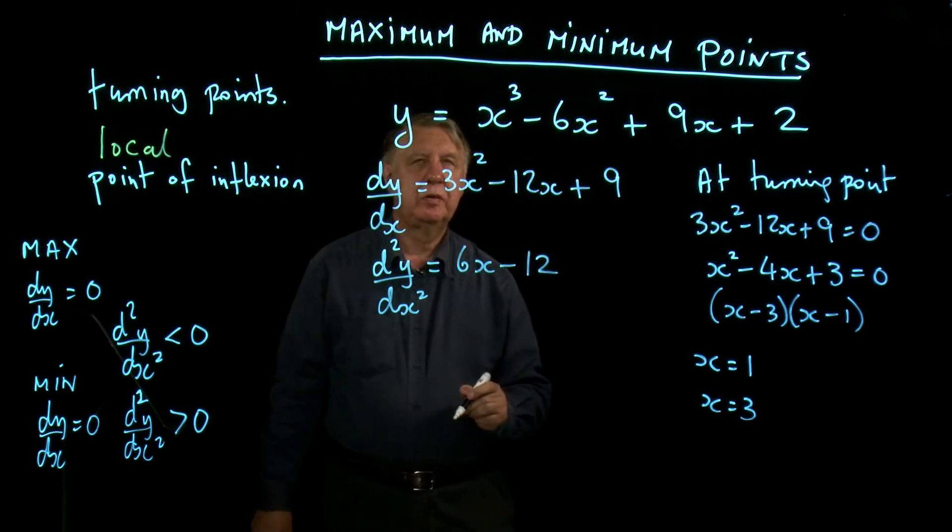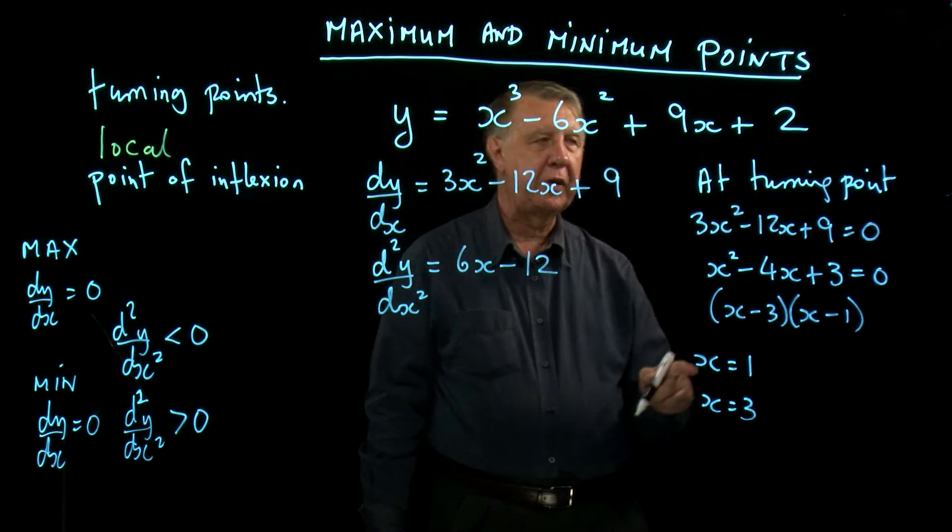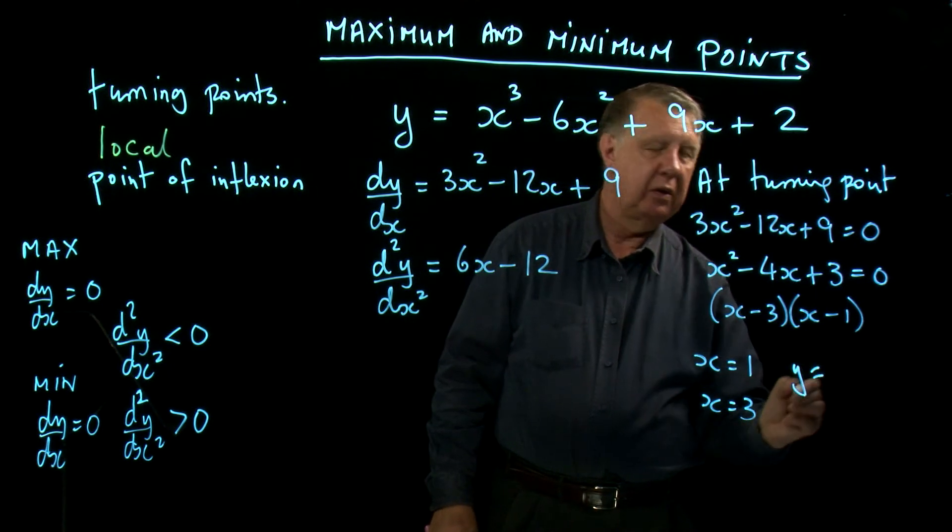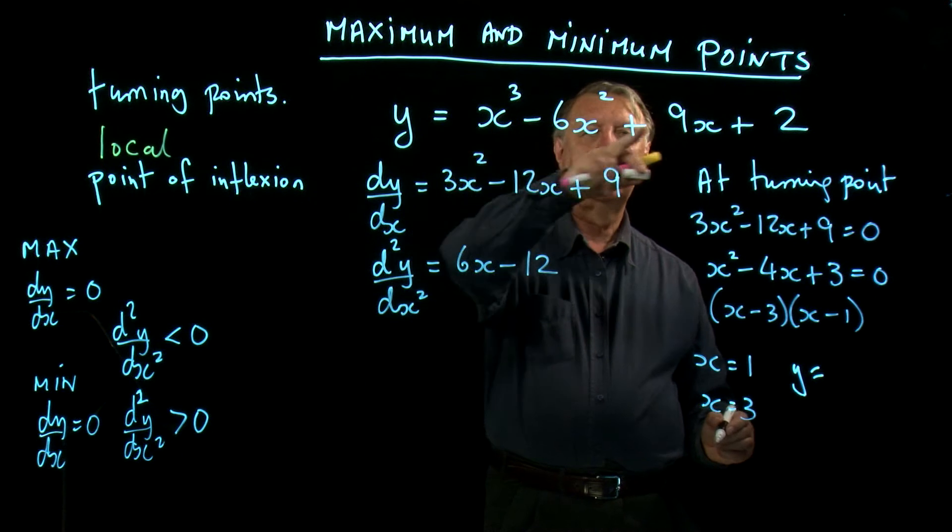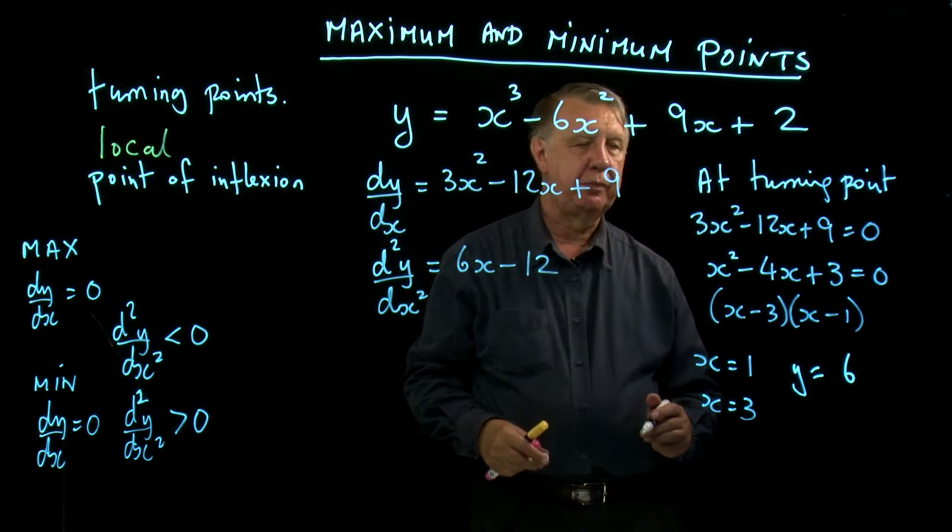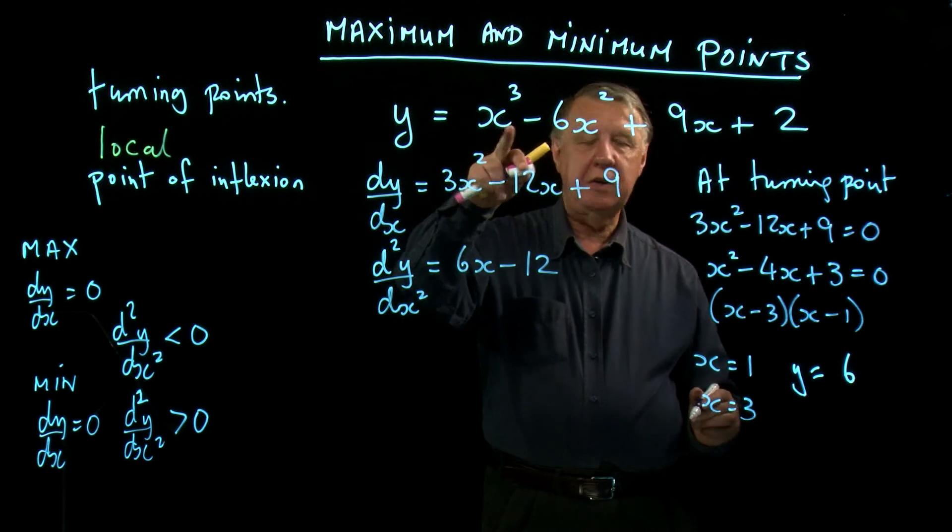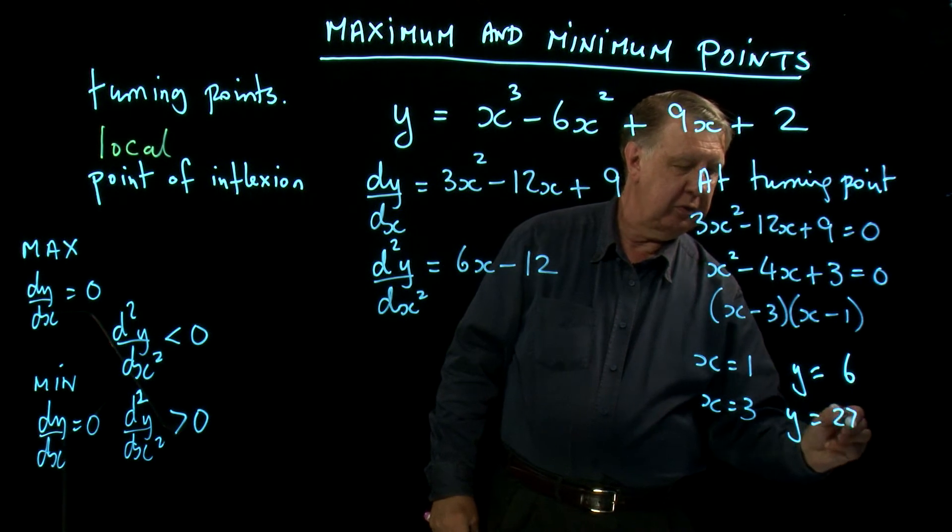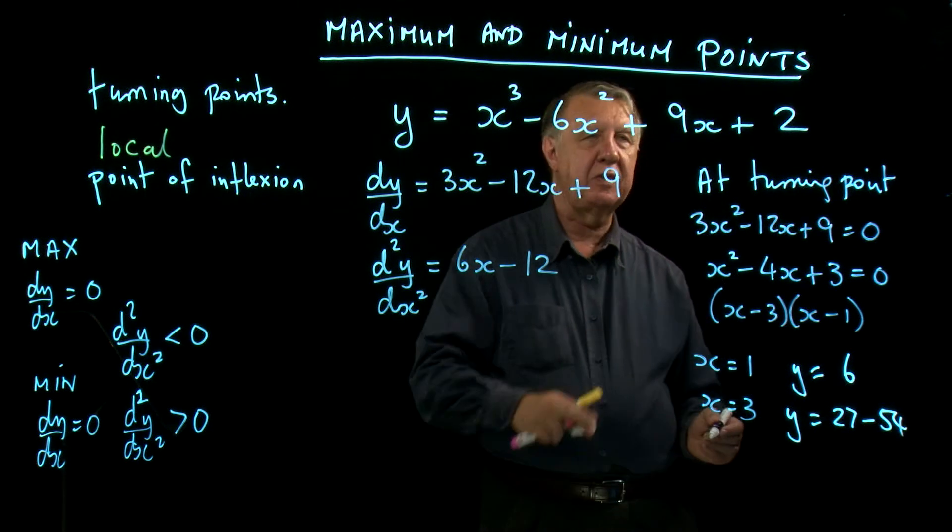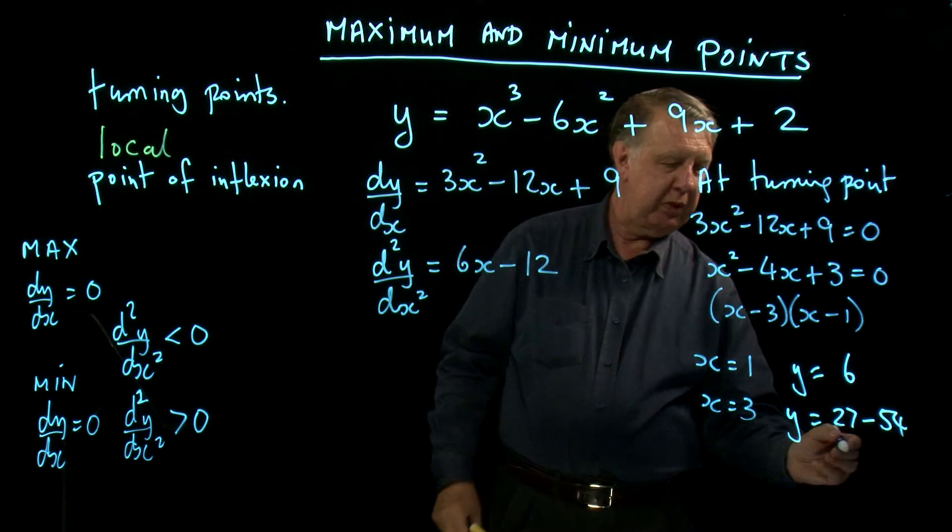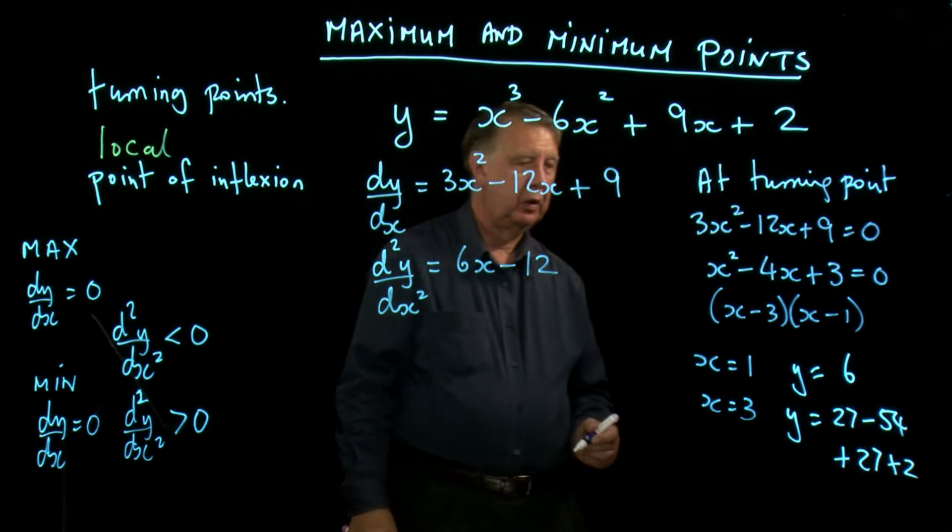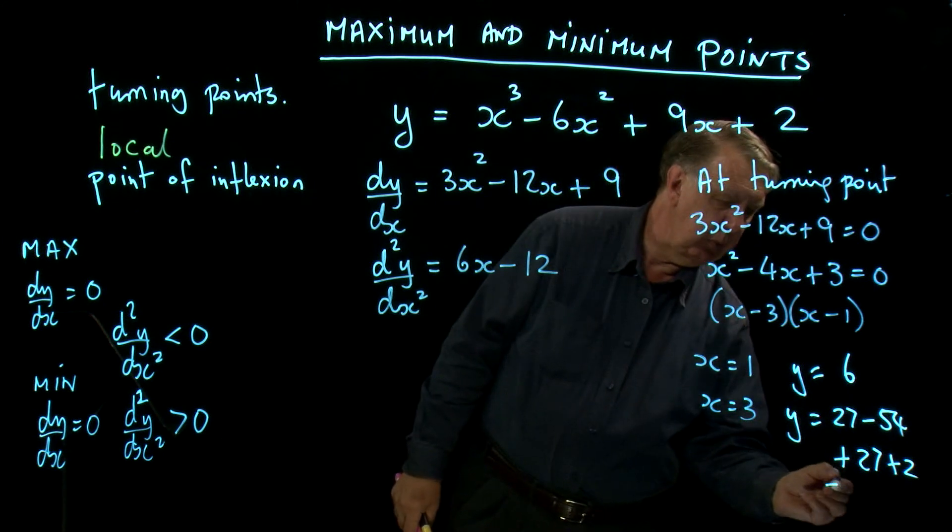Now we're looking for the coordinates of the points. So first of all, I need to substitute x = 1 into there. So y will equal 1, and 9 is 10, 11, 12, take away 6 is 6. If x is 3, I don't think I'm going to do this one in my head: 27 minus 54 is -27, plus 27, plus 2. So y will be 2.